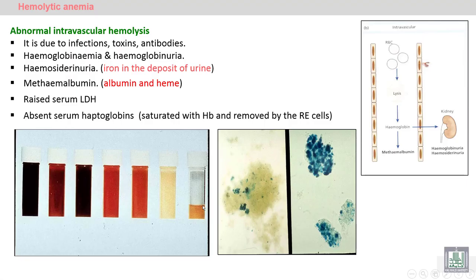Intravascular hemolysis is the abnormal destruction of red blood cells inside the blood vessel due to infection, toxins, or antibodies against the red blood cells. This leads to release of hemoglobin into the blood — hemoglobinemia — and excretion of hemoglobin in the urine (hemoglobinuria), as well as release of iron in the urine (hemosiderinuria), which is iron deposition in the urine.